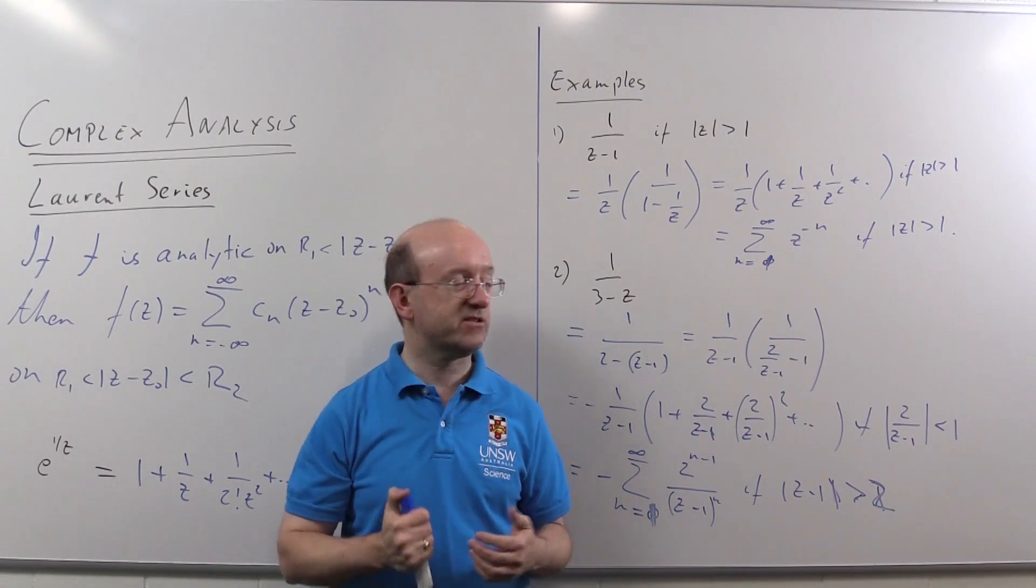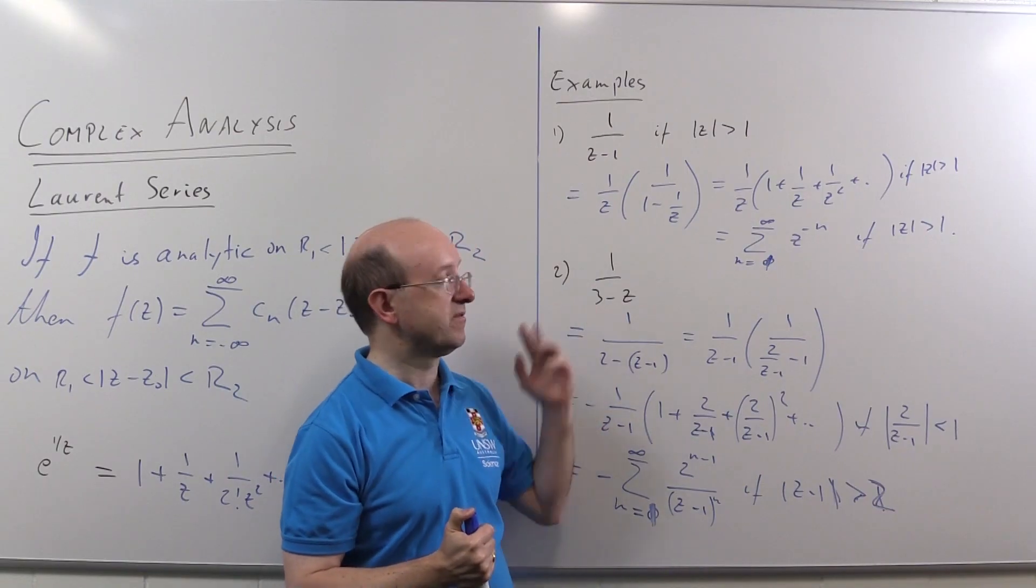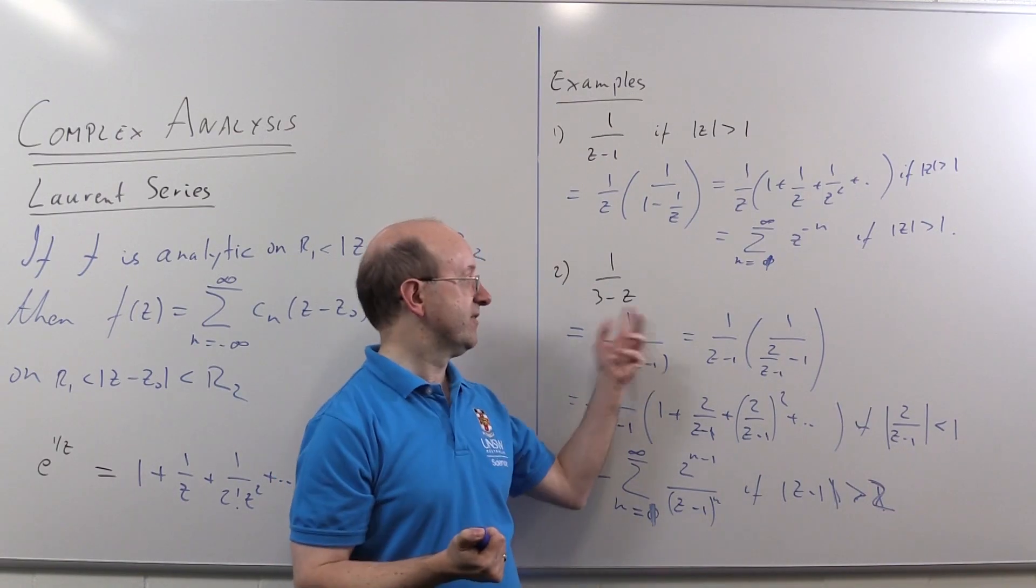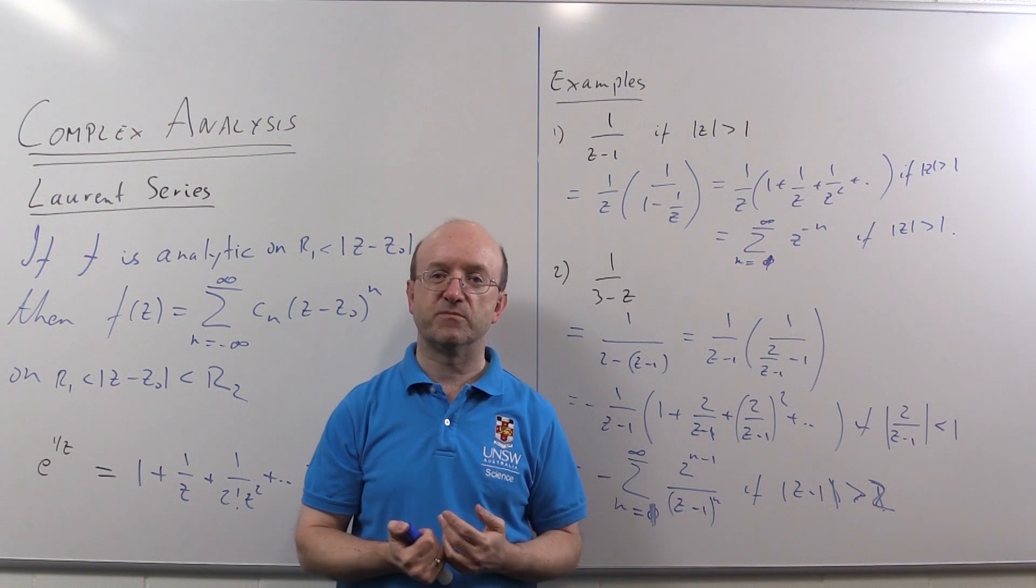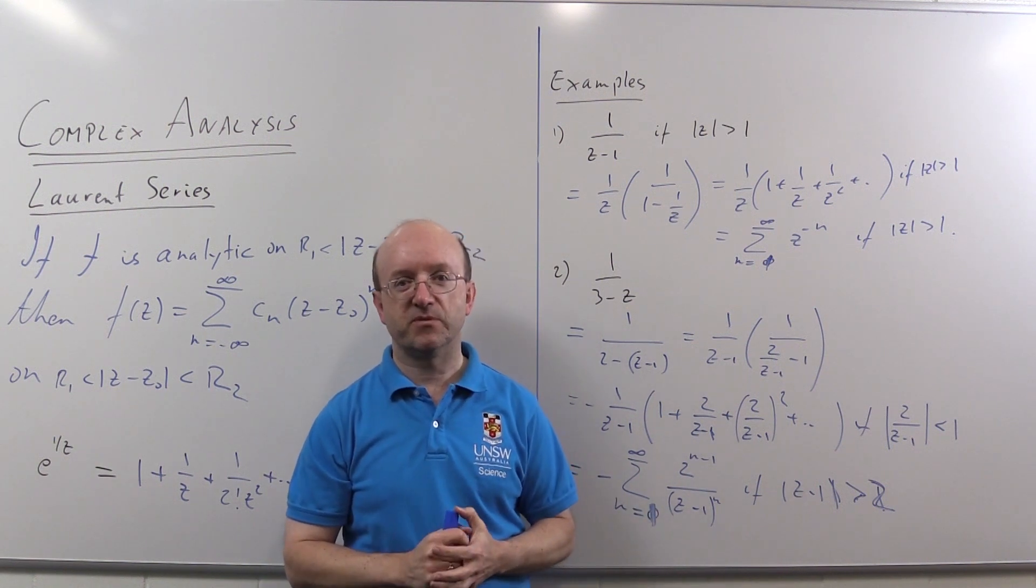And similar to the Taylor series examples, if you've got something involving more roots on the denominator, you use partial fractions to break it up and just do each bit separately.